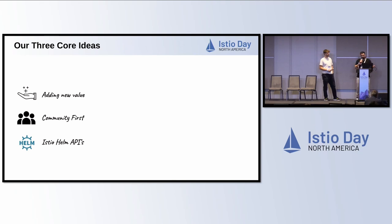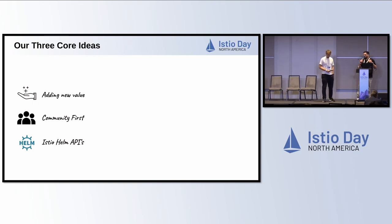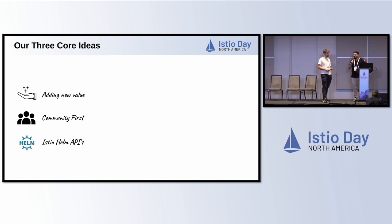We are basing this operator on the Istio Helm API. This means we are taking directly the Helm charts from the Istio upstream project and using them in the operator. This is really useful because once a change is made in the upstream community, we can port that change immediately without waiting large periods.